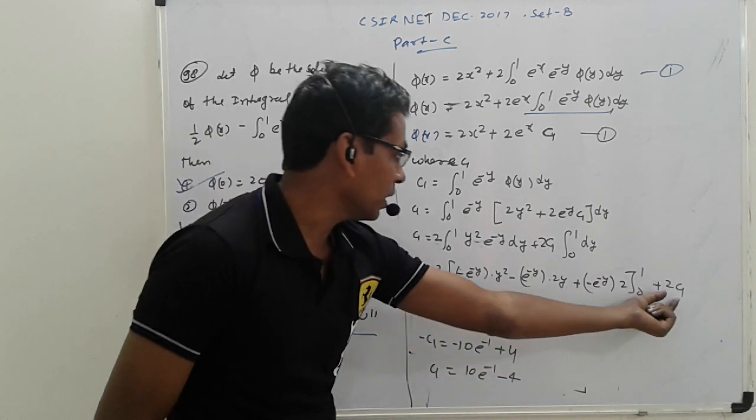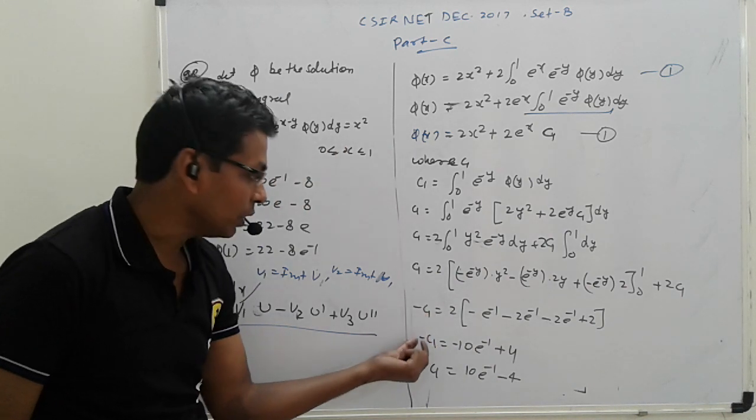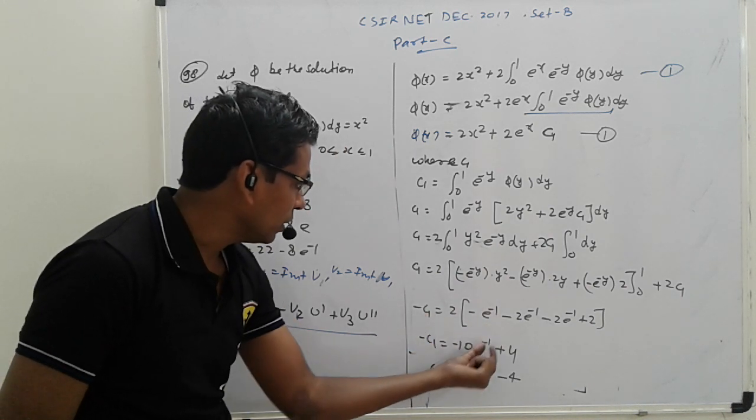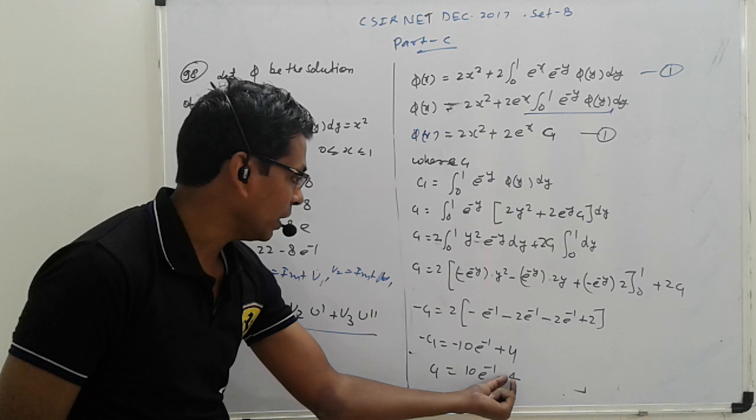2 C1. C1 transferred to left hand side, that is minus C1. So 10 e raise to minus 1 plus 4, so 10 e minus 1 minus 4.